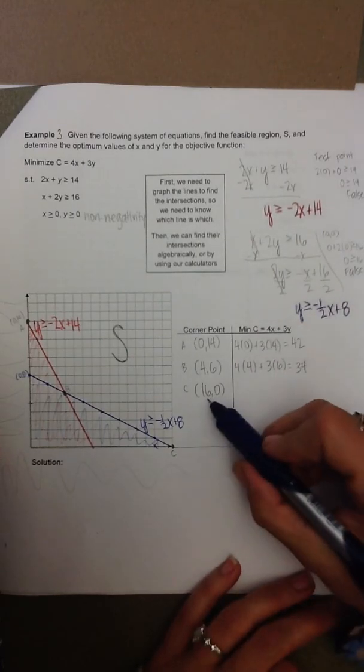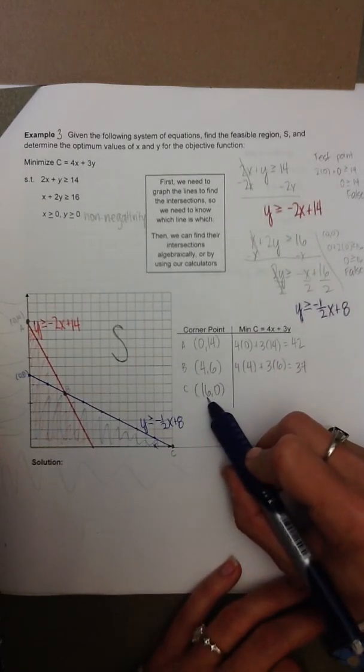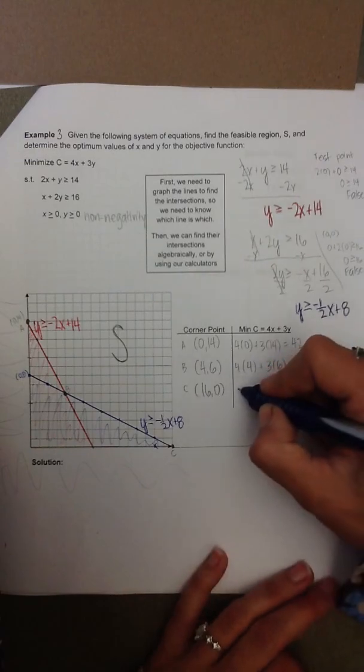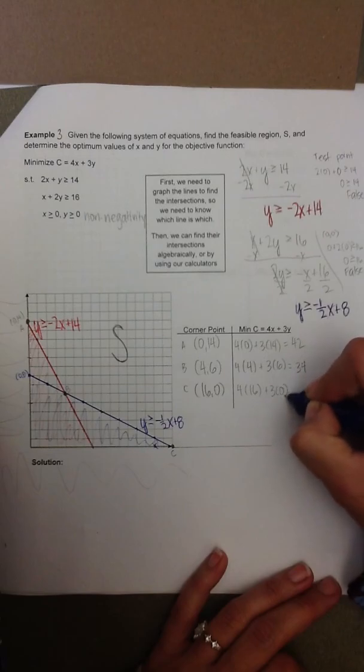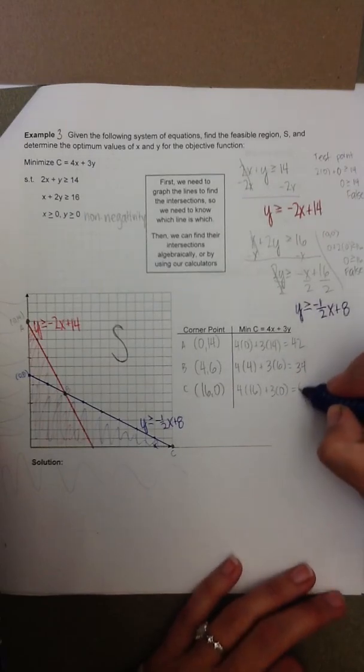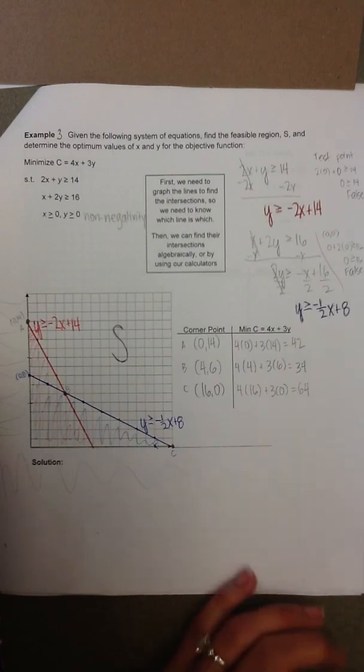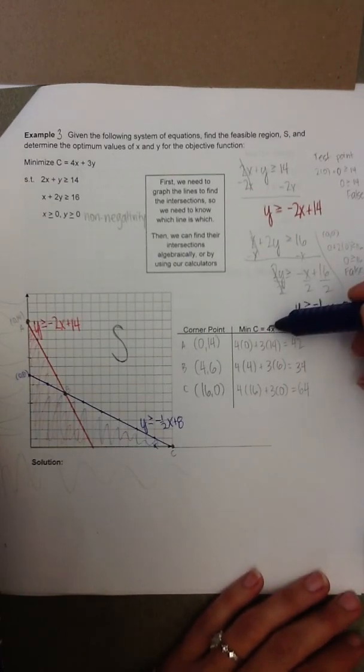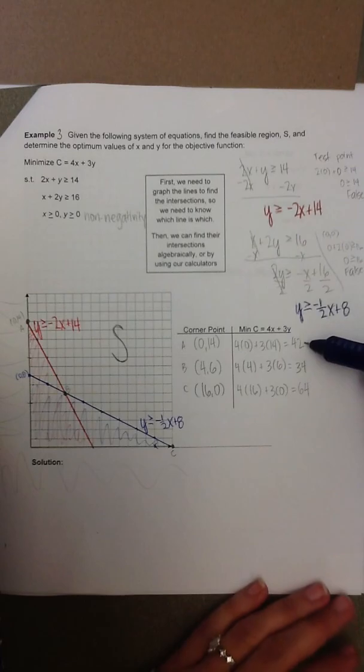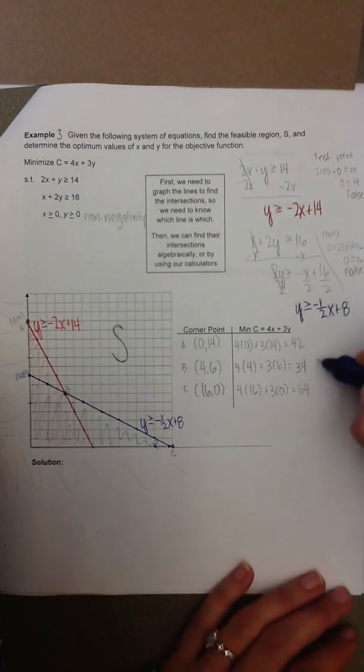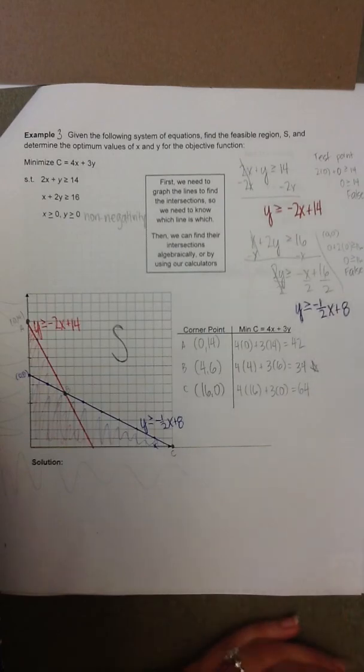And finally, the third corner point has an x value of 16 and a y value of 0. So we have 4 times 16 plus 3 times 0, which gives us 64. Now, the objective function here is to minimize c equal to 4x plus 3y. So when we look at the values obtained from plugging in the corner points, we could see that 34 is a minimum.